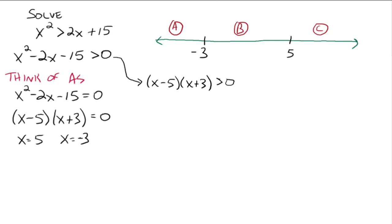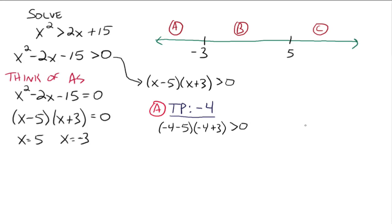Now we go region by region. For region A, we take a test point — any number in that region, like negative 4. We plug it in: negative 4 minus 5 times negative 4 plus 3, greater than 0. That gives negative 9 times negative 1, which is positive 9, which is certainly greater than 0. So this is true, and we mark region A as true.